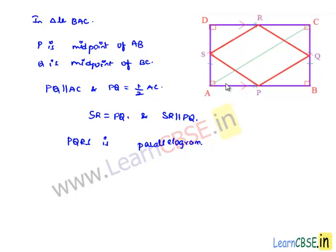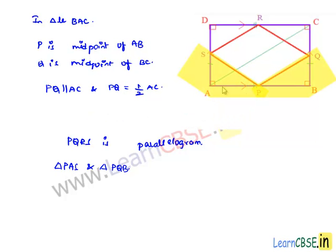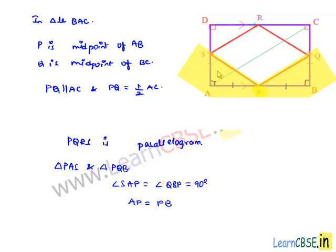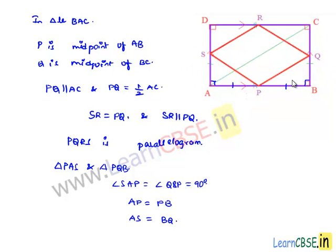In order to prove that PQRS is a rhombus, let us consider triangles PAS and PQB. In these two triangles, angle SAP equals angle QBP equals 90 degrees, since ABCD is a rectangle. Also, AP equals PB since P is the midpoint of AB. Since ABCD is a rectangle, AD equals BC, and since S is the midpoint of AD and Q is the midpoint of BC, we have AS equal to BQ. By SAS property, the two triangles are congruent.